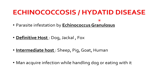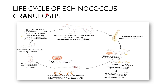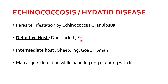Hydatid disease is the second important parasitic infestation. It is caused by Echinococcus granulosus. Sexual maturity is achieved in the definitive host, which includes dogs, jackals, or foxes. The intermediate host for this parasite is sheep, pigs, cows, or humans. Humans usually acquire the infection if they are involved in handling a dog or eating with a dog.